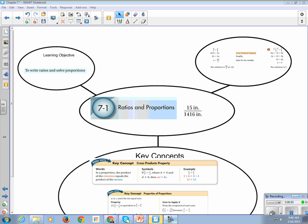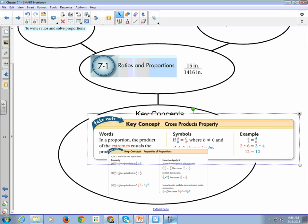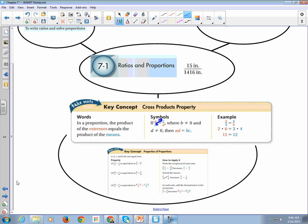So let's take a look at our key concepts. I'll blow them up so that you guys can see it. Our first key concept is the cross-products property. So when you have a proportion, the product of the extremes equals the product of the means. And this is where it's the cross-multiply. So we go top goes with the bottom equals top goes with the bottom.